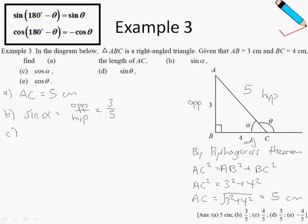For part C, cosine of alpha: cosine equals adjacent over hypotenuse. The adjacent side is 4 and the hypotenuse is 5, so cosine alpha equals 4 over 5.